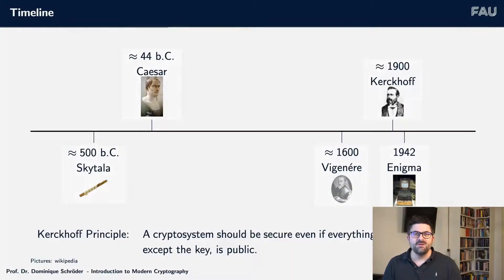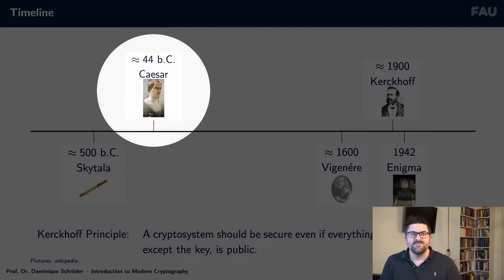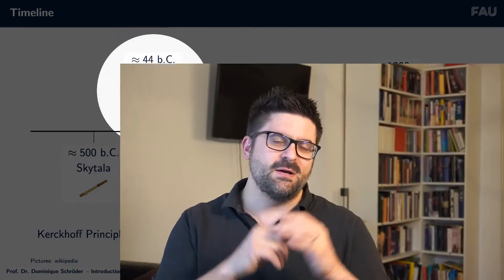Another famous example of an ancient cipher is the Caesar cipher. Caesar had the idea that you start with a plain text and push each letter a few positions further in the alphabet. You associate a number to each letter — so A would be 1, B would be 2, and so on. Then you push each letter by a fixed number. For example, if your letter is A and you push it by 2, the plain text letter A becomes C in the ciphertext.